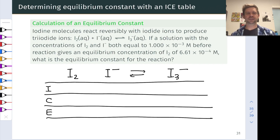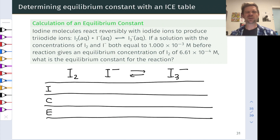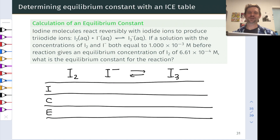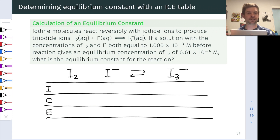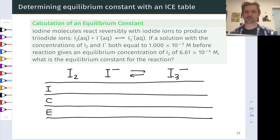In this video, we're going to work through some examples of applying ICE tables, both to determine equilibrium concentrations or partial pressures and equilibrium conditions more generally, and the less common but still important application of using an ICE table to determine an unknown K value from information about the initial conditions and incomplete information about the equilibrium situation. And that's what's going on in this problem.